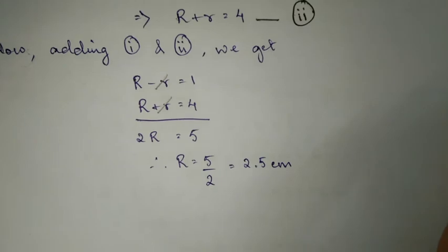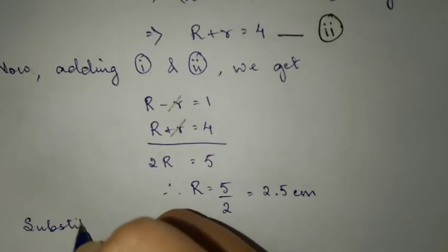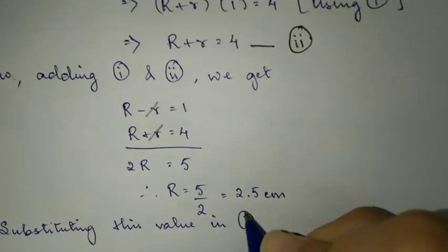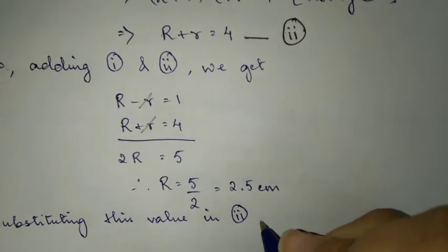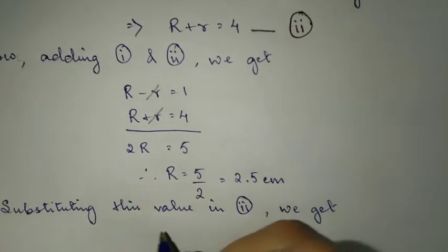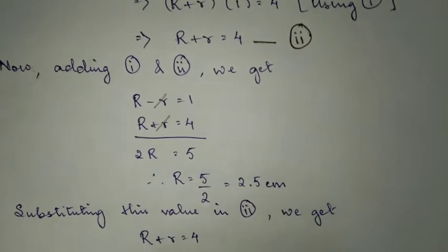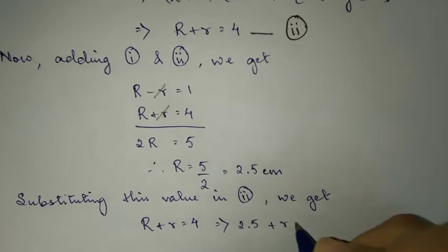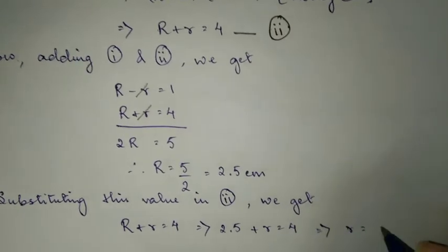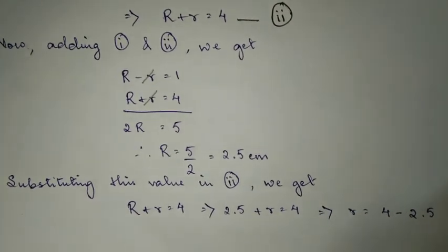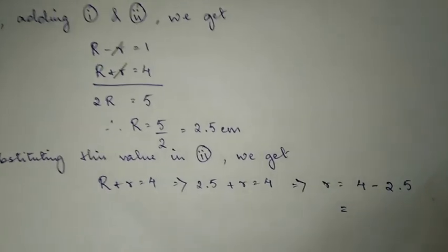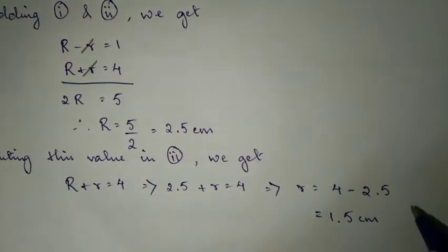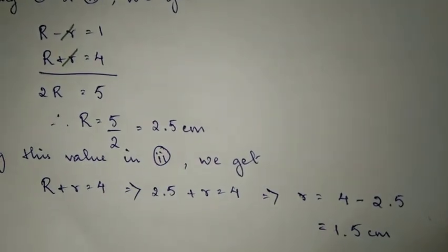Now, if you substitute the value of big R in equation 2, we get: R + r equals 4. So 2.5 plus r equals 4. Subtracting 2.5 from both sides, you get 4 minus 2.5 equals 1.5. So small r equals 1.5 cm.